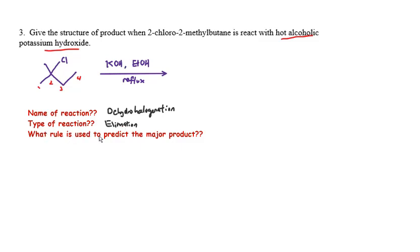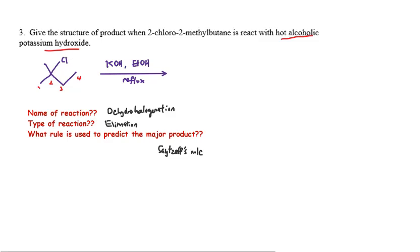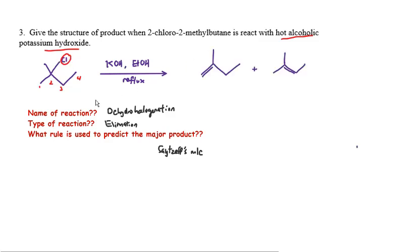This reaction is dehydrohalogenation — the preparation of an alkene — and the type of reaction is elimination. To predict the major product we use Zaitsev's rule. Zaitsev's rule states that the major product is the more highly substituted alkene. Focusing on carbon number two with the Cl group, you can remove the hydrogen from either carbon one or carbon three.